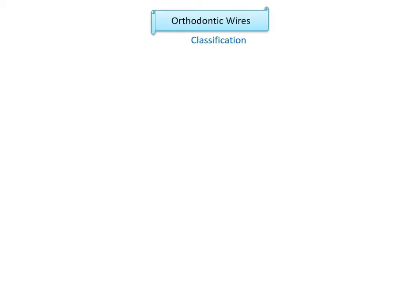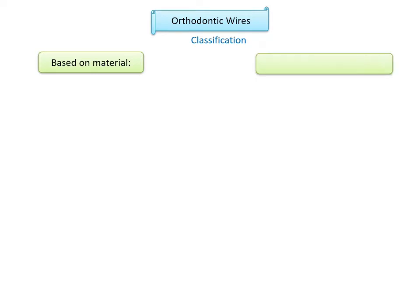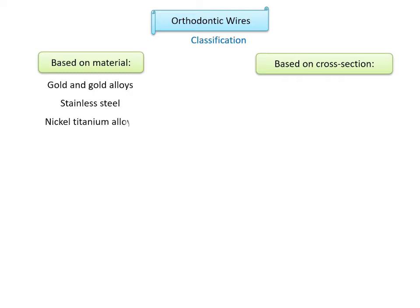Moving on to the classification of orthodontic wires, they can be classified based on material and based on cross-section. Based on material, the categories are gold and gold alloys, stainless steel, nickel-titanium alloys, beta titanium, cobalt-chromium-nickel alloys, and Optiflex arch wires.